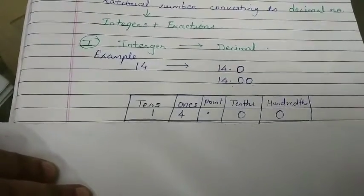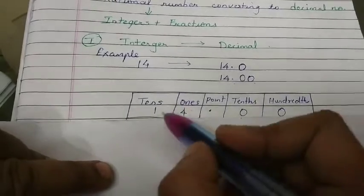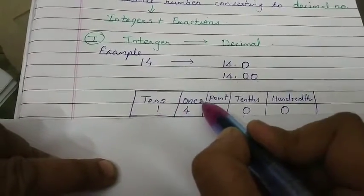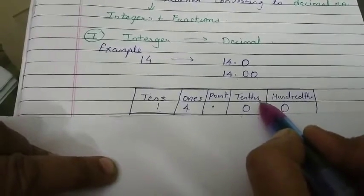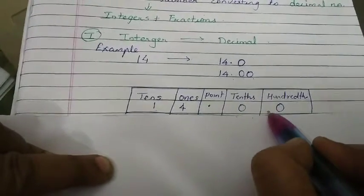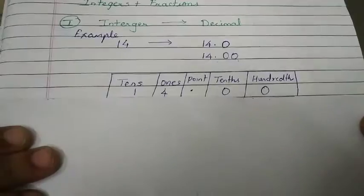It can be set into, in tens place we have 1, ones place we have 4 point, tenths place we have 0, hundredths place we have 0.